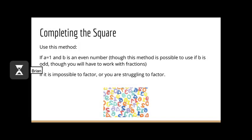The final method we will go over today is completing the square. We use this method if a equals 1 and b is an even number. You can use it if b is odd, but you'll have to work with fractions, and no one wants to work with fractions. You can also use completing the square if you get a quadratic that's impossible to factor or you are struggling to factor.